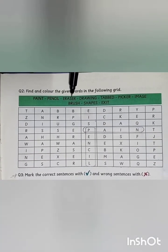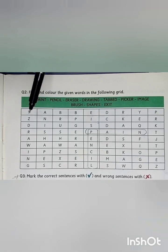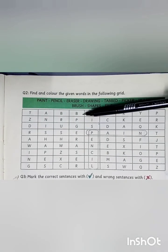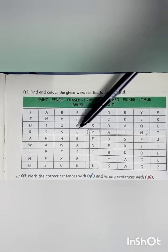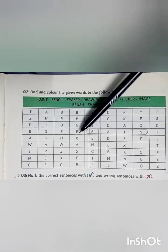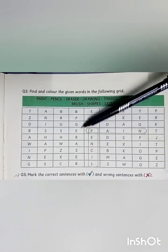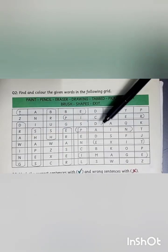Next we have the word eraser. Students, here in the 4th column in the 4th row we have the letter E, so E-R-A-S-E-R. This is our word eraser. Dear students, I have circled all these words. Now it's your time to color them.